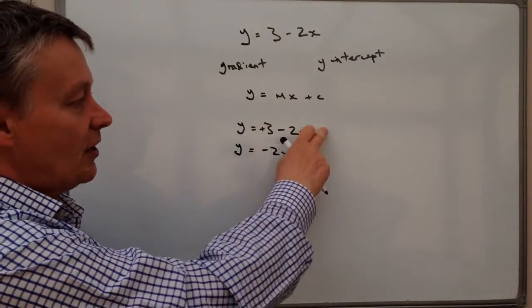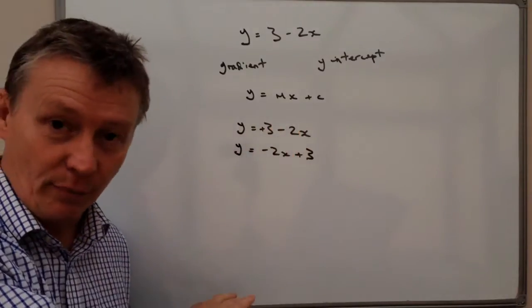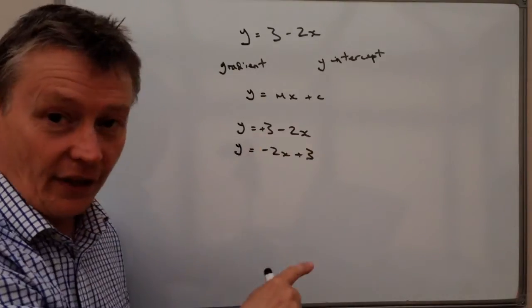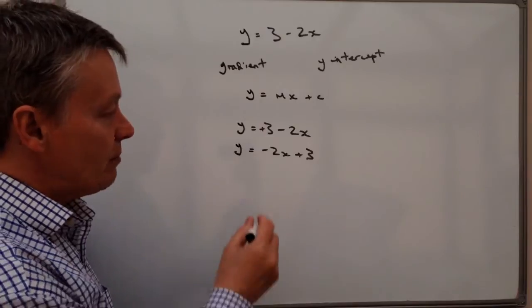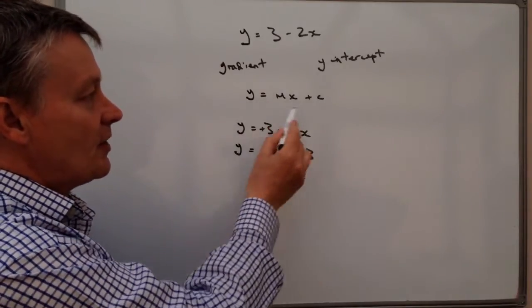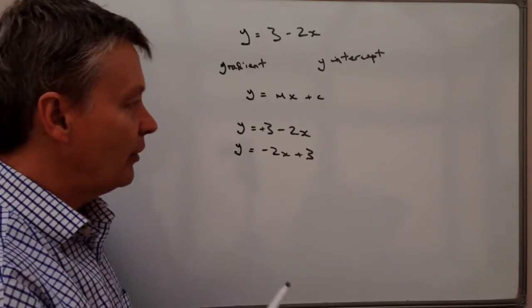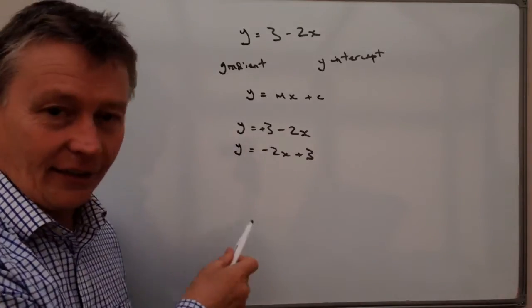So in other words, this term minus two x I've put at the beginning, and this term positive three I've put at the end. Which means that I'm now able to answer this question because it's in the correct format. But I just want to prove to you that they are exactly the same.